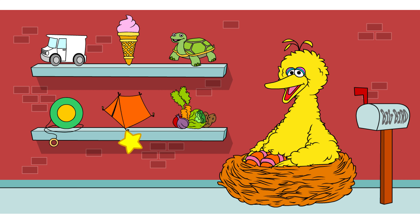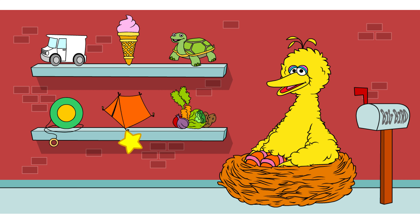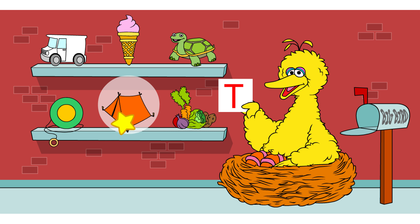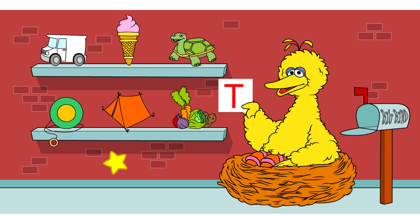Let's take another look in the old mailbox. I think I've got another letter. Oh boy! It's the letter T. There are three things on my shelves that start with this letter. See if you can find them. Click on something that starts with the letter T.